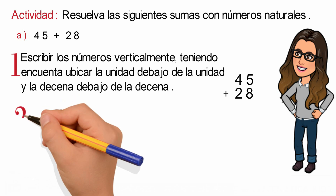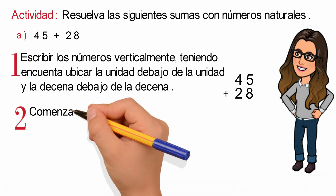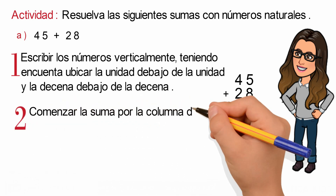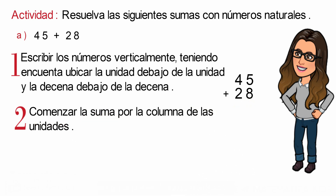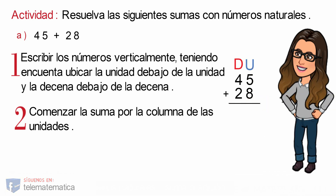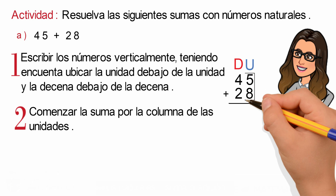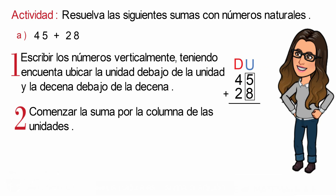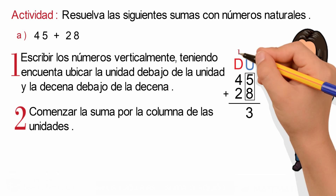Paso número 2: comenzar la suma por la columna de las unidades. Para ello, identificaremos la columna de las unidades y la columna de las decenas respectivamente, y resolvemos: 5 más 8. Escribimos el 3 y llevo 1, y lo escribiremos encima de la columna de las decenas.